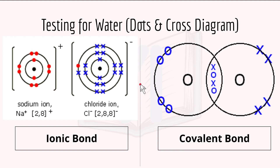Then we have testing for water. We have the ionic bond and the covalent bond as context. An ionic bond happens between a metal and a non-metal - it's the electrostatic attraction between oppositely charged ions. A covalent bond is the electrostatic attraction between a shared pair of electrons and their nuclei.